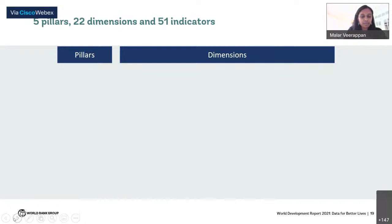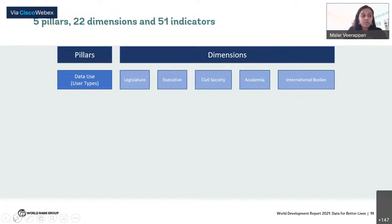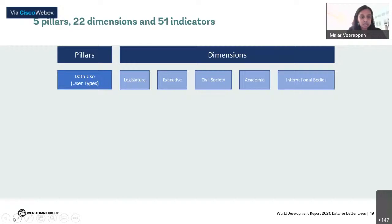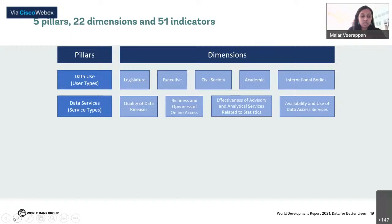The SPI is organized into five pillars with components or dimensions under each. Data has no value unless it is used, so data use is the first pillar, with components including data used by branches of government, civil society, academia, and international agencies. For example, does a country produce statistics on safely managed water that are used by international organizations and academic institutions? The second pillar is data services trusted by users, such as the quality of data releases and openness of access — measured using the ODIN openness score based on whether data is available online in machine-readable, non-proprietary format, downloadable with metadata.